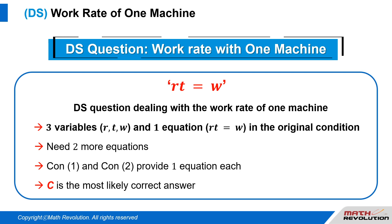When we solve the DS question dealing with the work rate of one machine, we usually have three variables—R, T, and W—and one equation, R times T equals W, in the original condition.